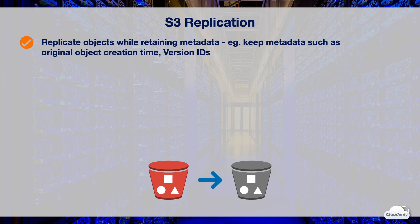You can enable same-region replication or cross-region replication for all objects in a bucket, or objects with specific prefixes or tags. You need to enable replication at the bucket level.